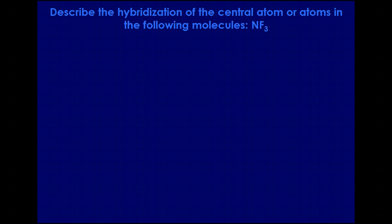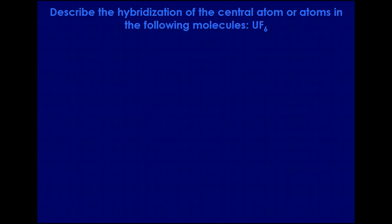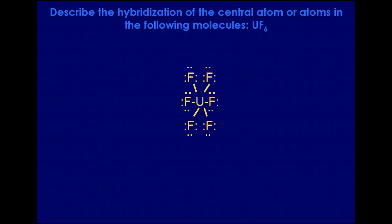For NF3, we see that there are four areas of electrons surrounding the nitrogen atom, so we need four orbitals — that's an sp3 hybridization. For UF6, similar to SF6, we have six pairs of electrons surrounding the central atom, so we need six orbitals. We already have sp3 for four of them, and the other two will come from d2, giving us d2sp3.